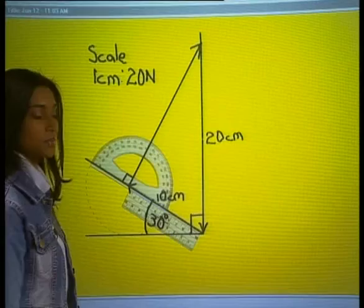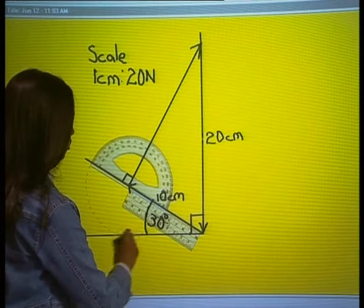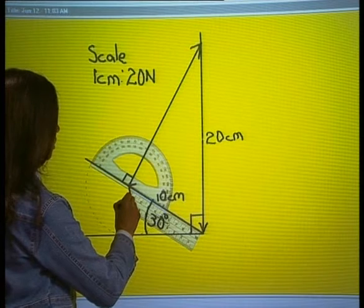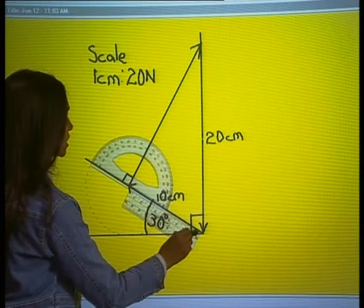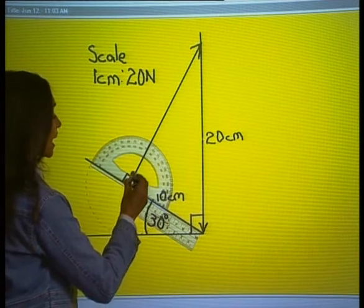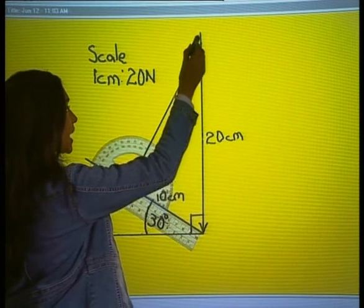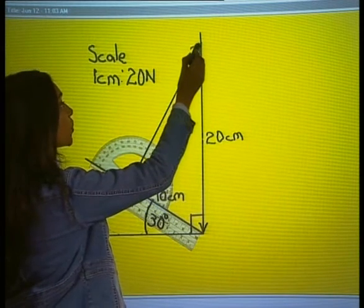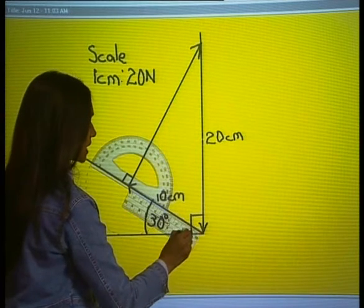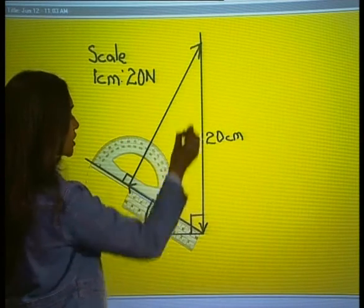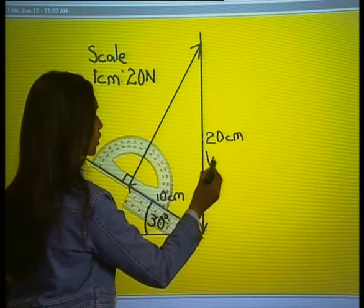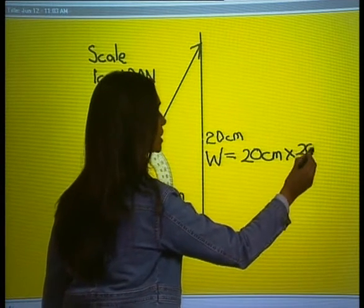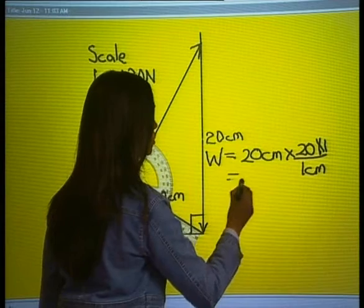Here is my scale diagram. I have drawn the surface of the inclined plane at 30 degrees to the horizontal. You can see that the 200 N force acts parallel to the surface in an upward direction. Using the scale, I have drawn a line of 10 cm to represent this force. I then drew a line perpendicular to this force to represent the normal force, and the weight acts vertically downwards. To measure the length of the weight, we measure from where the weight vector intersects with the normal force to where it intersects with the horizontal. On measuring, we find the weight is equal to 20 cm. Using our scale and converting, 20 cm multiplied by 20 N per cm equals 400 N.